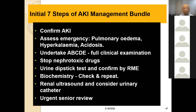The initial seven steps of AKI management bundle: first, confirm AKI by definition and findings. Second, assess emergency — whether there is pulmonary edema due to acute left ventricular failure, hyperkalemia, and acidosis, and address all these complications immediately. Third, perform full clinical examinations. Fourth, stop nephrotoxic drugs. Fifth, urine dipstick test confirmed by routine urine examination. Sixth, biochemistry — check urea and creatinine and repeat as needed. Seventh, renal ultrasound, and consider urinary catheter placement plus urgent senior review.